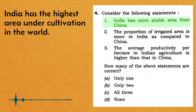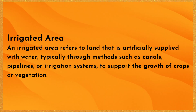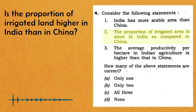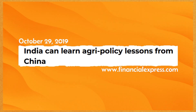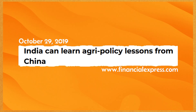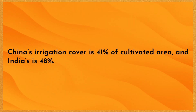Toh phir pehli statement easily solve ho jaati hai is basic knowledge se. Ab doosri statement jismein poocha gaya hai, India ka irrigated area — matlab jis area mein man-made sources se water ko supply kiya jaata hai, for example canals ke zariye — ye area under irrigation, China ke area under irrigation se zyada hai. Ab ye option bhi sahi hai. Is news article ke according, India ka irrigation cover 48% hai aur China ka irrigation cover 41% hai.